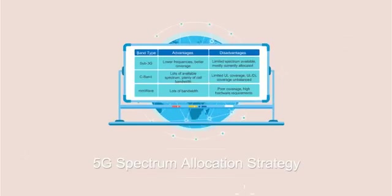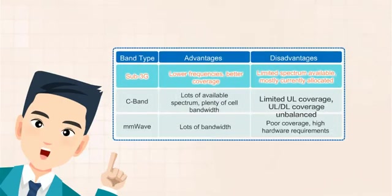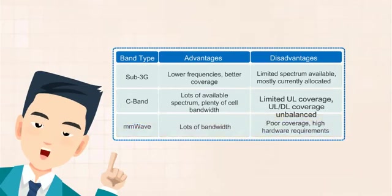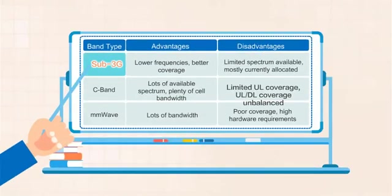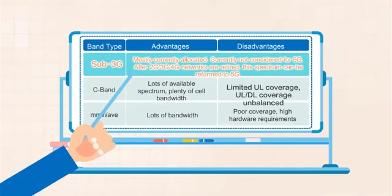Let's look at what strategy will be used for 5G spectrum deployment and examine the advantages and disadvantages of sub-3 GHz, C-band, and millimetre wave spectrums. Most of the sub-3 GHz spectrum is currently already being used for 2G, 3G, and 4G, so for the moment it is not under consideration for 5G deployment. In the future, as these networks are retired, we can start refarming this idle spectrum for sub-3 GHz 5G deployment.